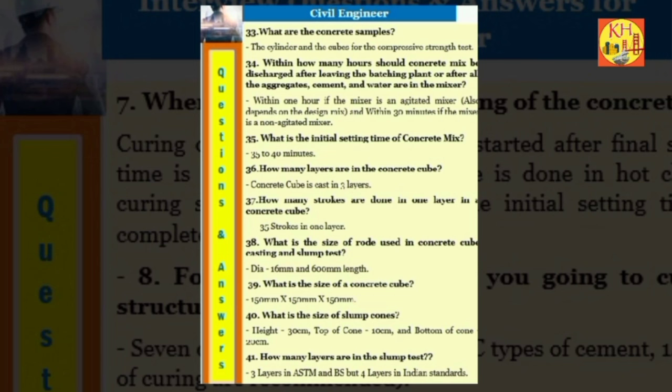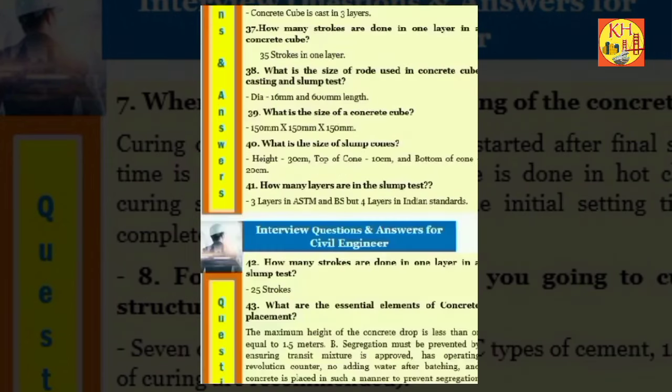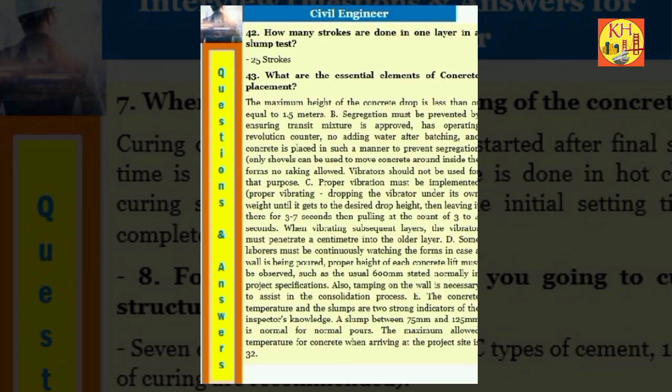Question 41: How many layers are in the slump test? Three layers in ASTM and BS but four layers in Indian standards. Question 42: How many strokes are done in one layer in a slump test? 25 strokes. Question 43: What are the essential elements of concrete placement? The maximum height of the concrete drop is less than or equal to 1.5 meters. Segregation must be prevented by ensuring transit mixture is approved, has operating revolution counter, no adding water after batching, and concrete is placed in such a manner to prevent segregation. Only shovels can be used to move concrete around inside the forms. No raking allowed. Vibrators should not be used for that purpose.